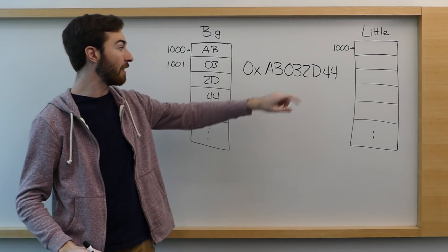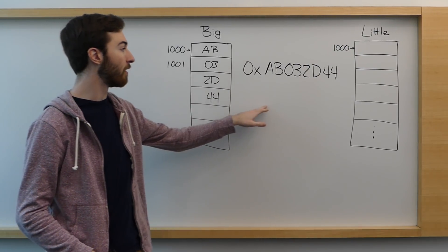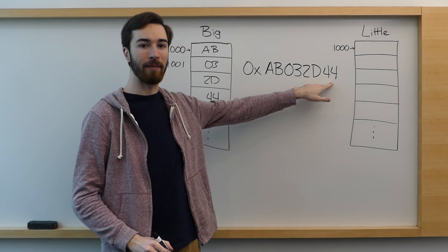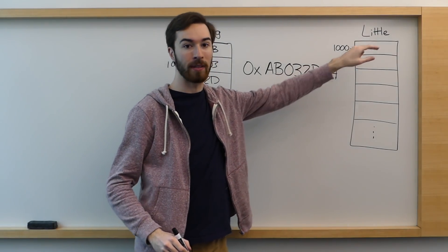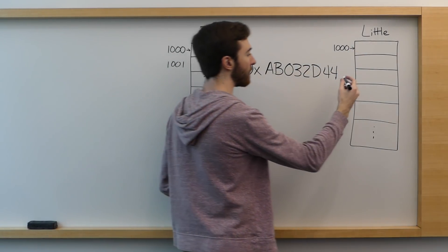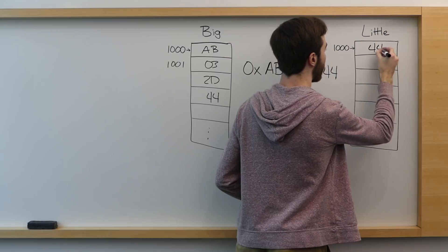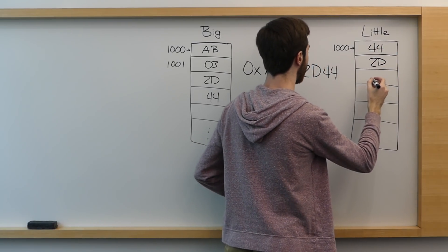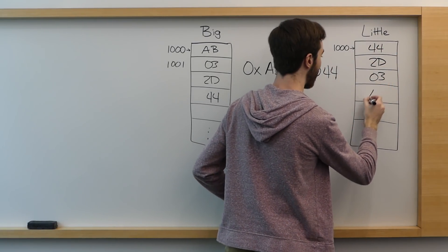Contrast that to a little endian system. In a little endian system, the least significant bits go in the lowest memory address. So instead, this number would be stored in the opposite direction, where we have 442D03AB.